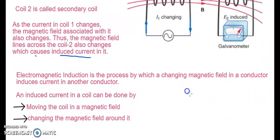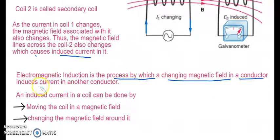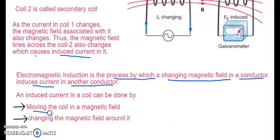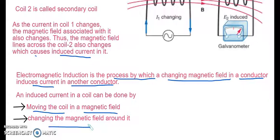Electromagnetic induction is a process by which a changing magnetic field in a conductor induces current in another conductor. We can achieve this either by moving the coil in the magnetic field or by moving the whole magnet around the coil — either move the coil around the magnetic field, or move the magnetic field around the coil.